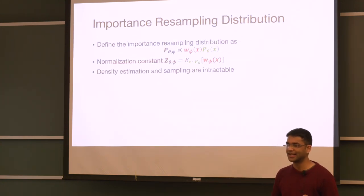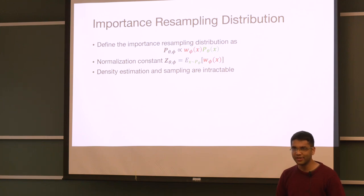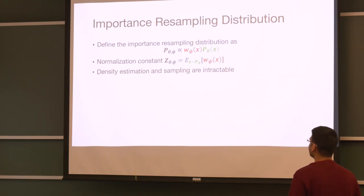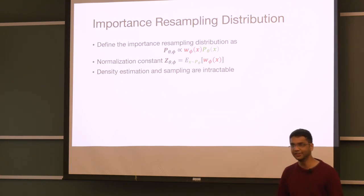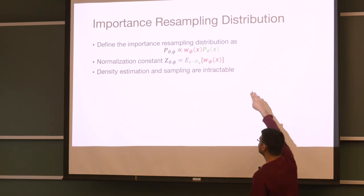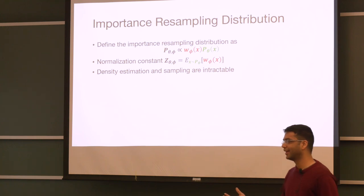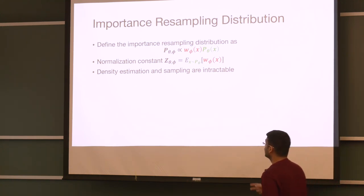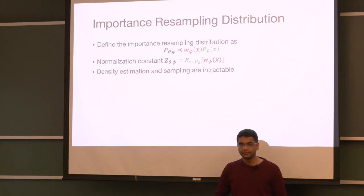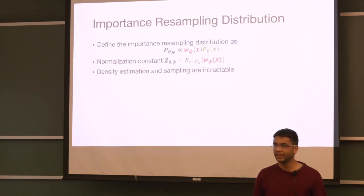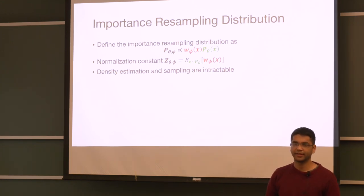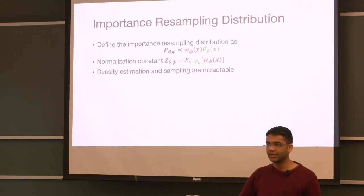This way of training a classifier to correct the bias actually induces a new generative model — specifically, an un-normalized model that is the product of two experts. The first expert is our base generative model P-theta. The second contribution comes from the weighting function we learned. Since the weighting function is positive and P-theta is positive, their product defines an un-normalized model. To estimate the partition function — which is the expectation of the weights with respect to P-theta — this could be intractable in general, so we use a particle-based approximation to this induced density.